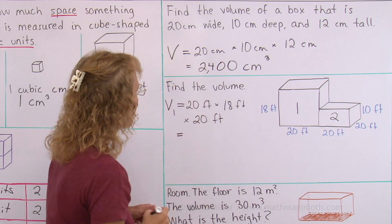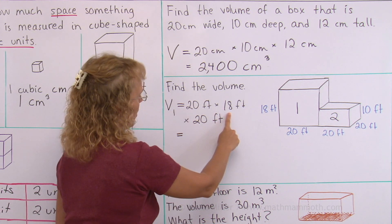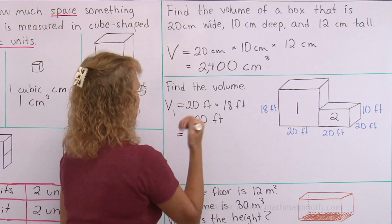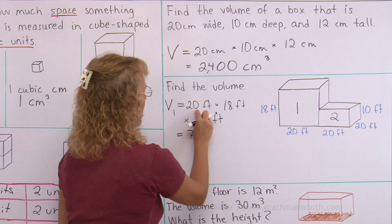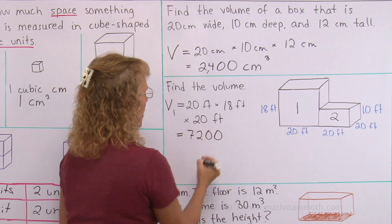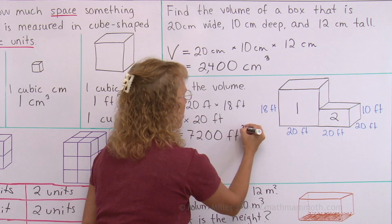Okay, now 2 times 18 is 36, times 2 is 72, and 0 and 0, and the answer is in cubic feet.